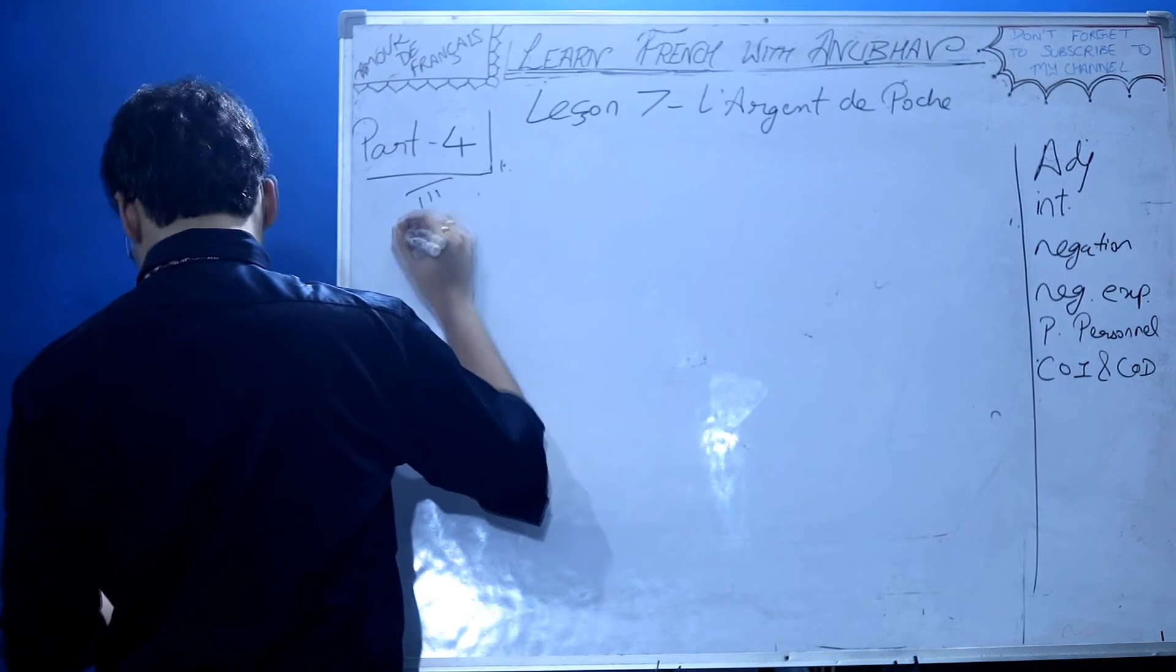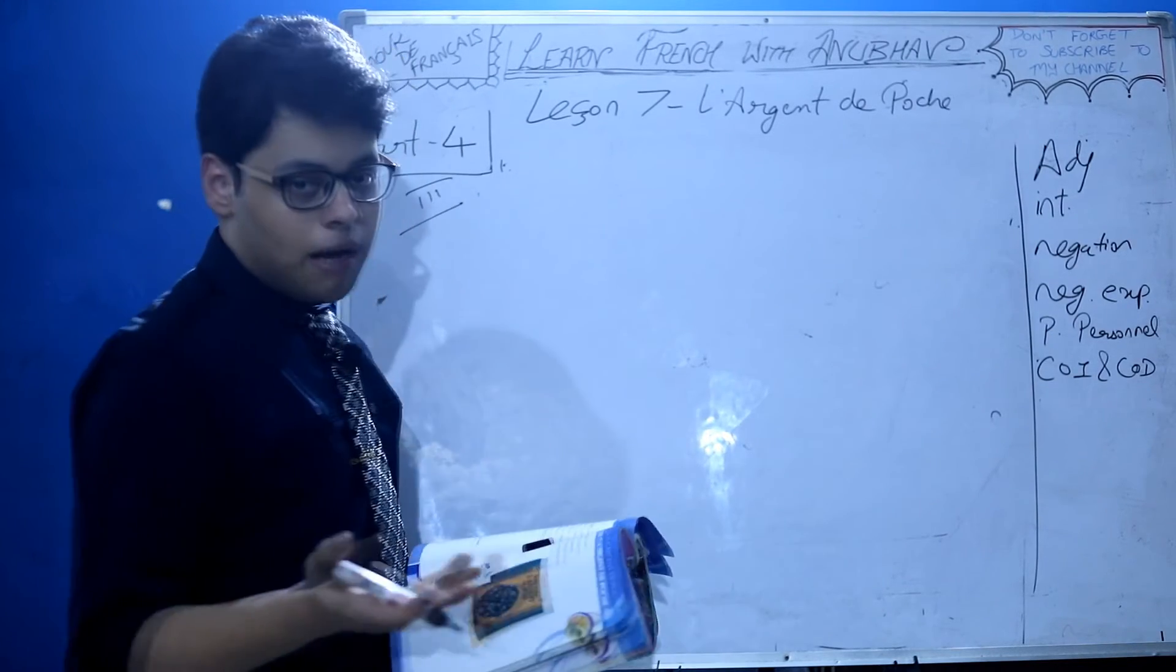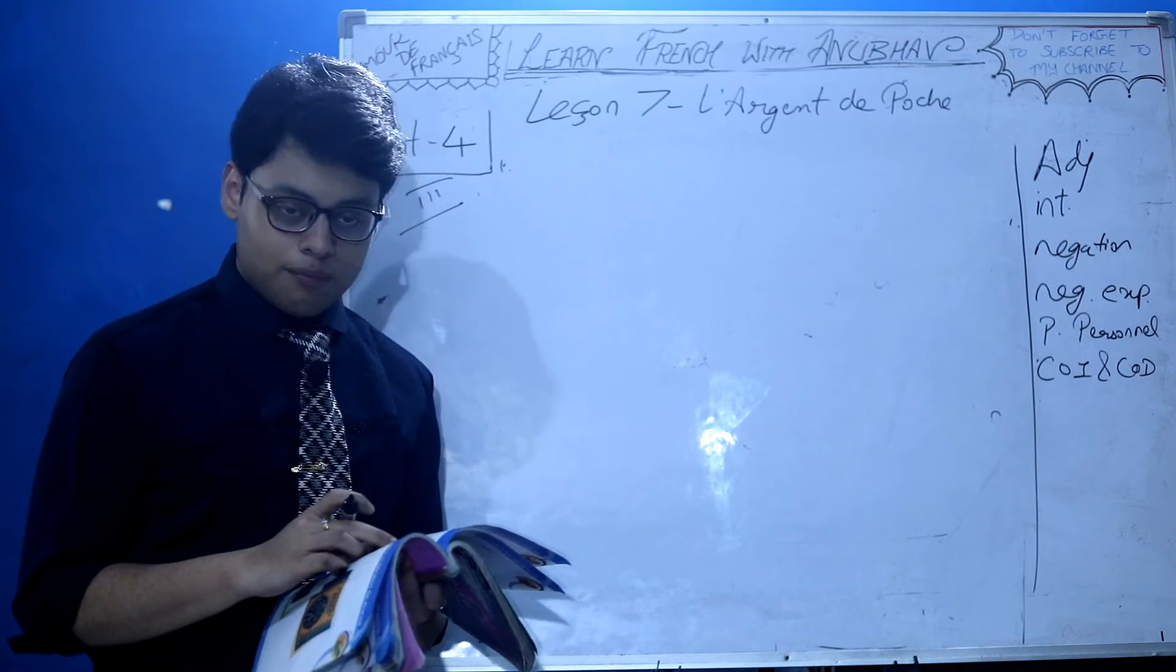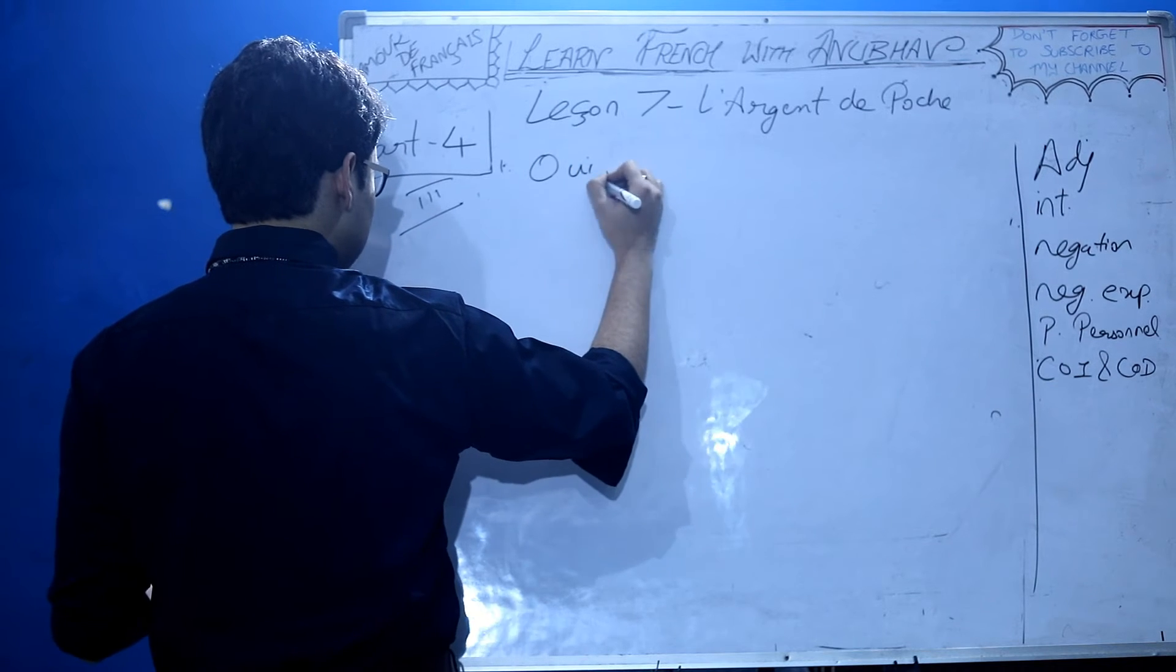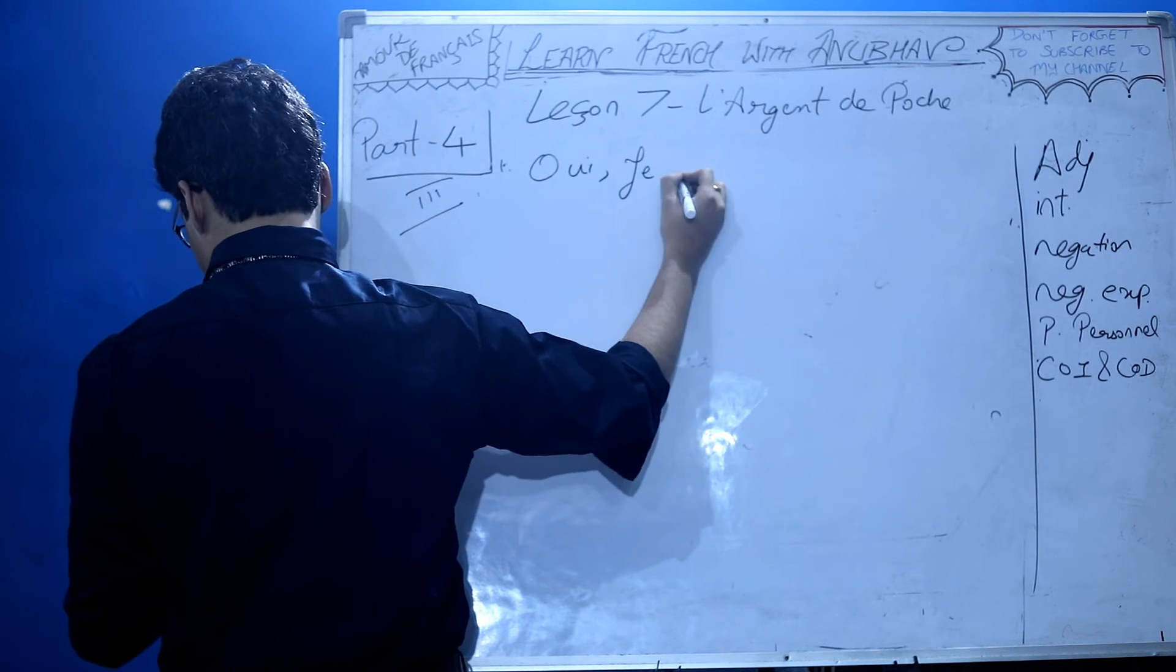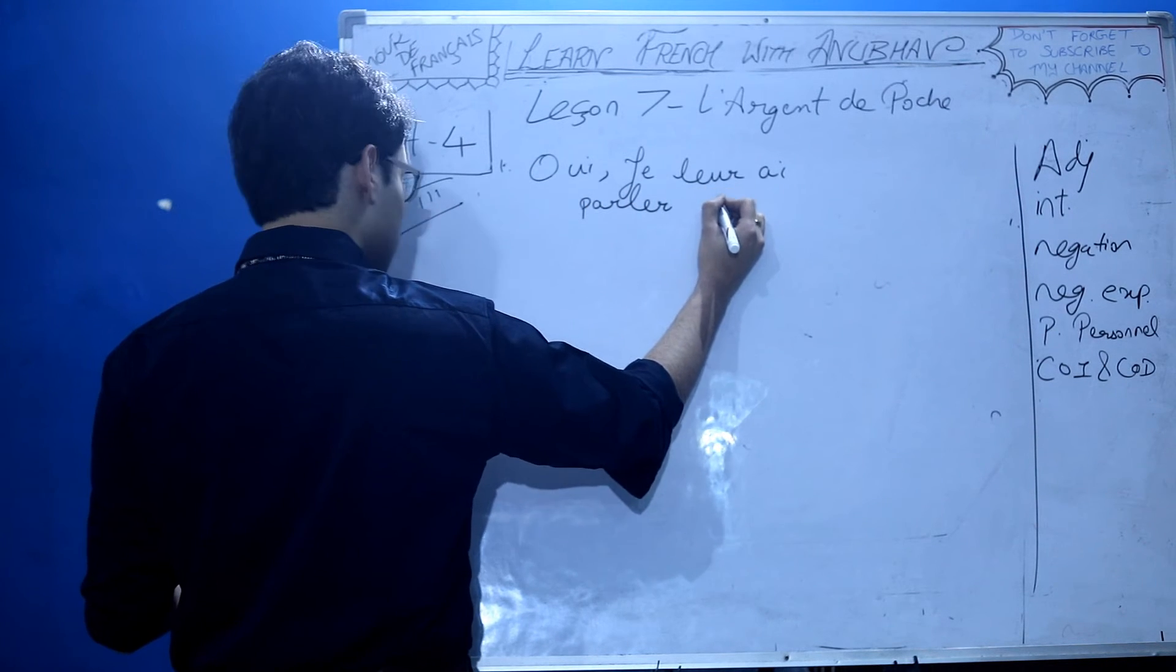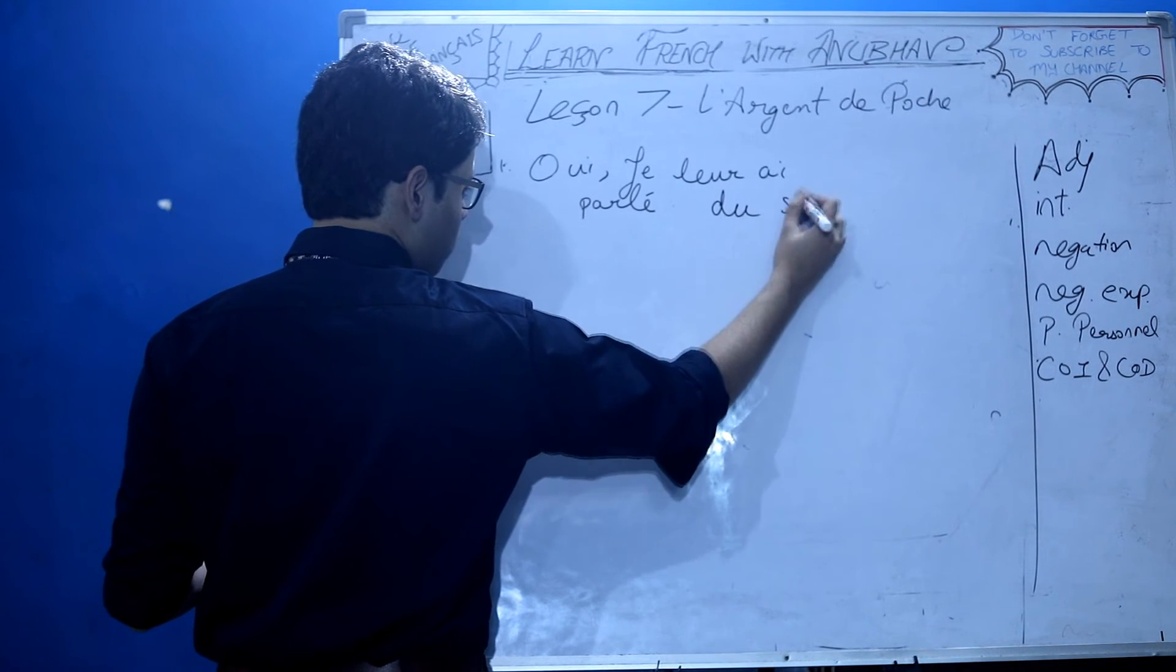Question 3, page 92: Réponds en utilisant lui ou leur. Reply by utilizing lui or leur. Est-ce que tu as parlé du spectacle à tes parents? Did you talk about the show to your parents? Oui. Yes or no is given in the statement, so do it accordingly. Je leur ai parlé du spectacle.